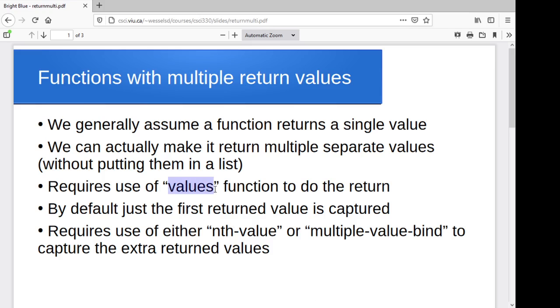So there's a values function that allows us to return multiple values. And then there's an nth-value function that lets us specify I want the first one that got returned, I want the second one that got returned, I want the third one that got returned. And there's actually another one that's kind of a shorthand called multiple-value-bind that we'll look at separately.